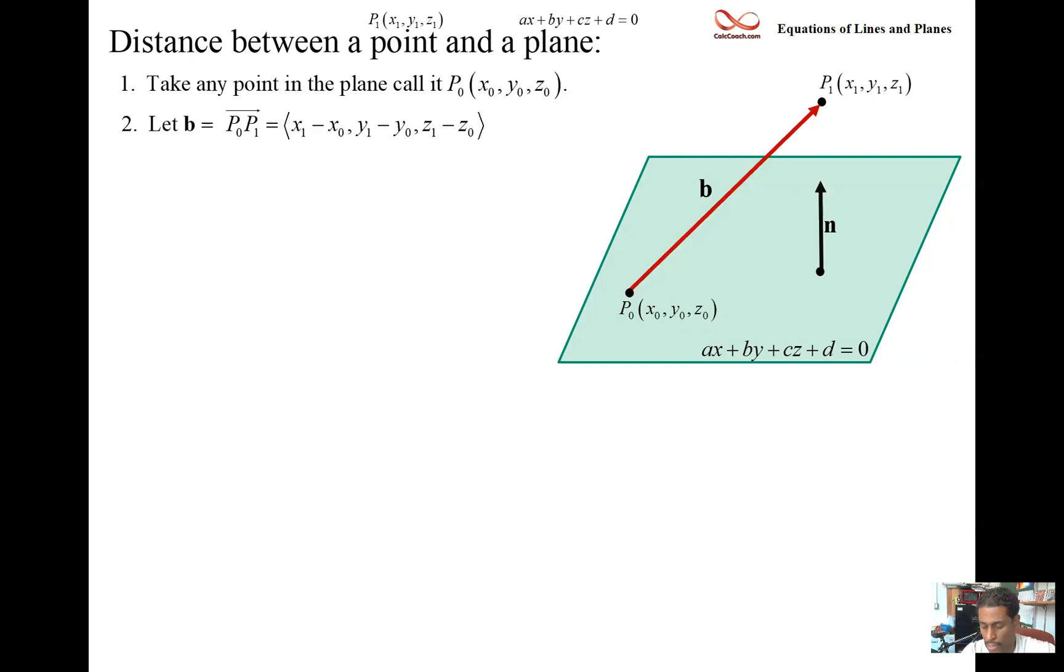Here's what we're going to do. What we're going to do is connect the two points that are on the plane, and we are going to project the vector b onto the normal vector. And with that then, we're interested in how long that projection vector is.